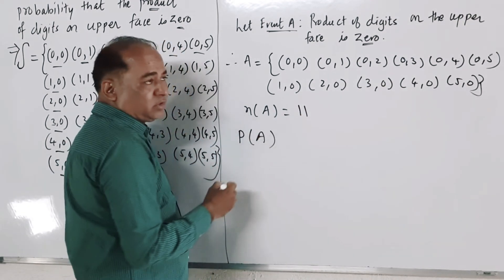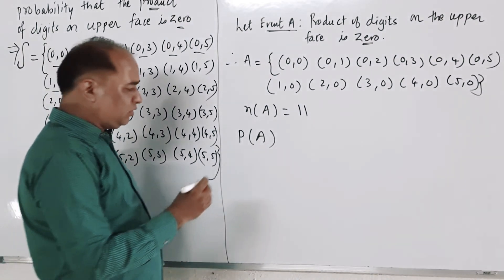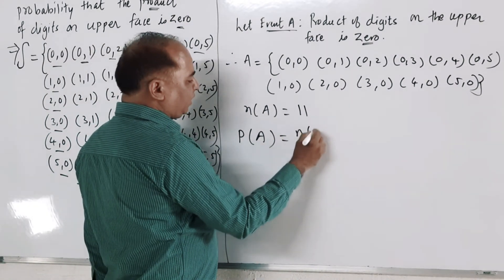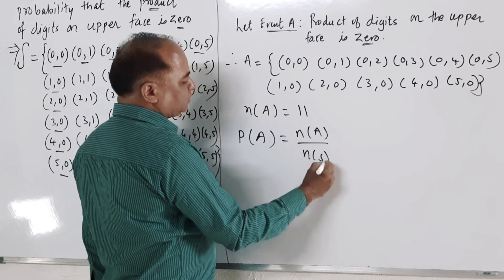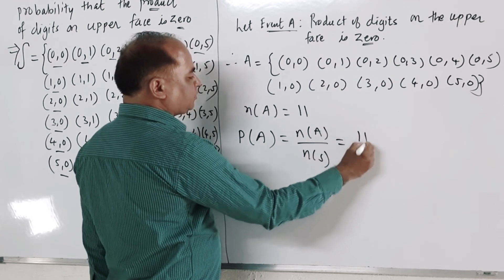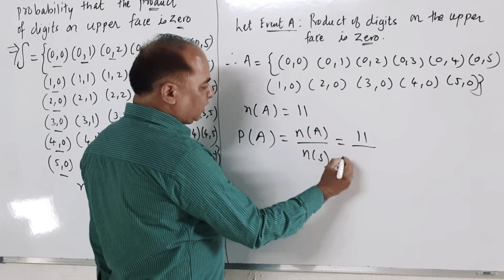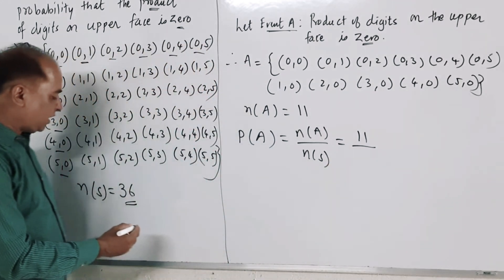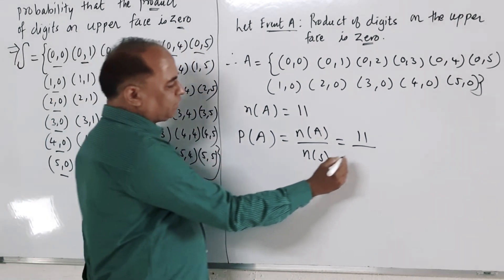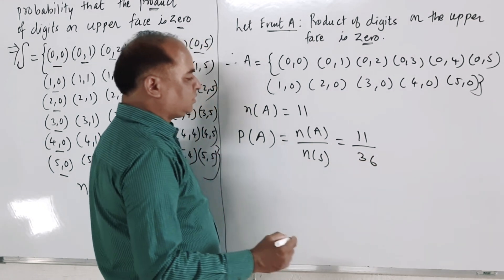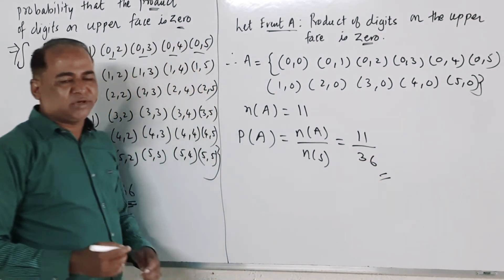Probability that the product of the digits on the upper face is zero equals probability of A, that is NA upon NS, which is equal to 11 upon 36.